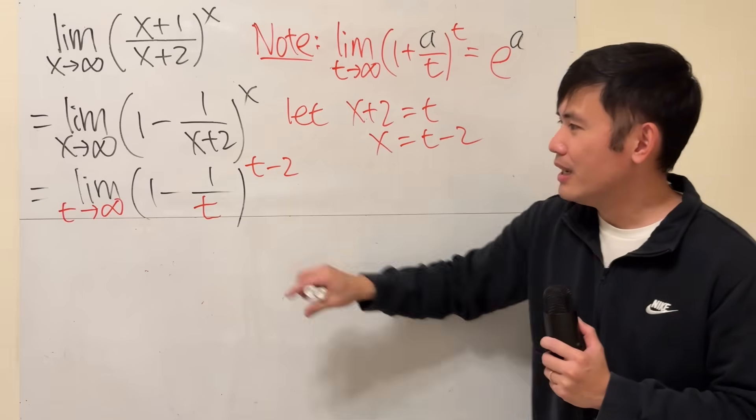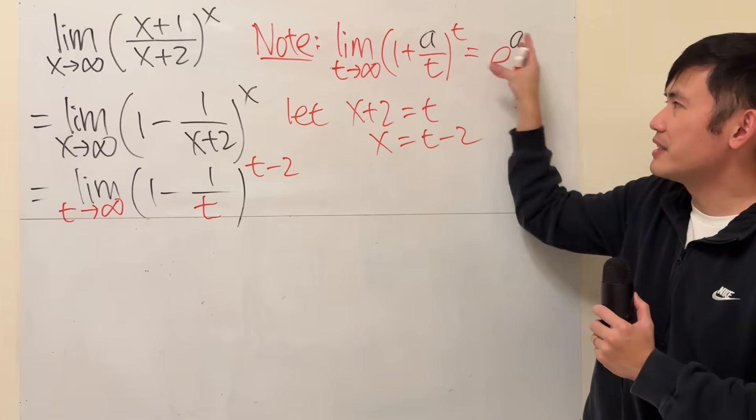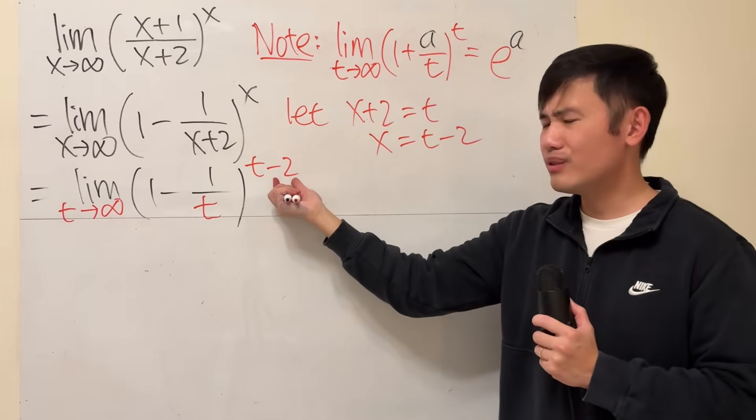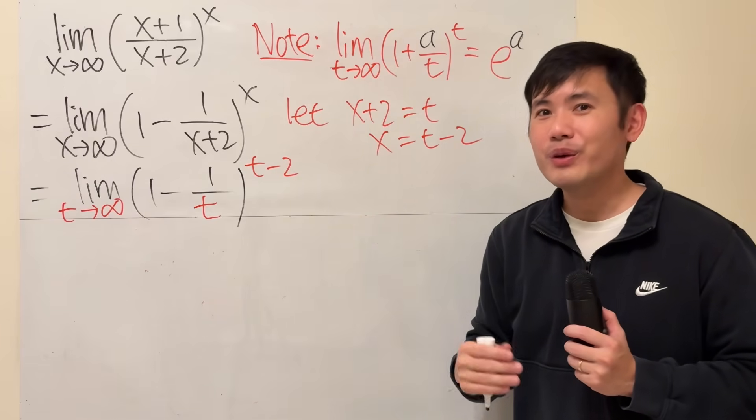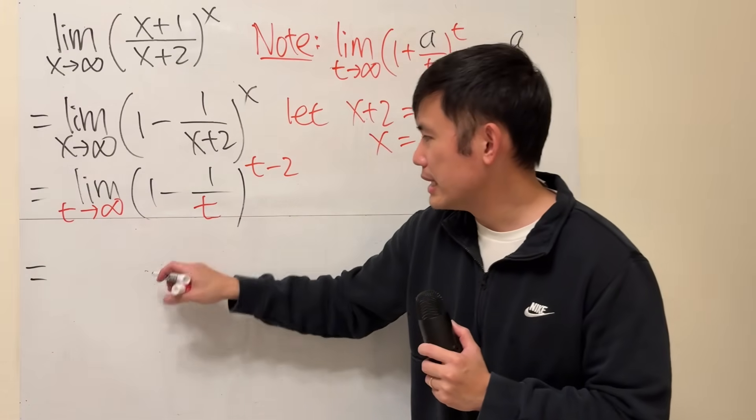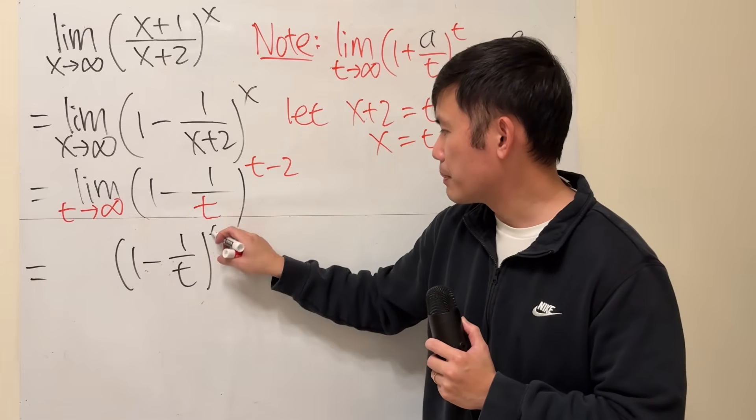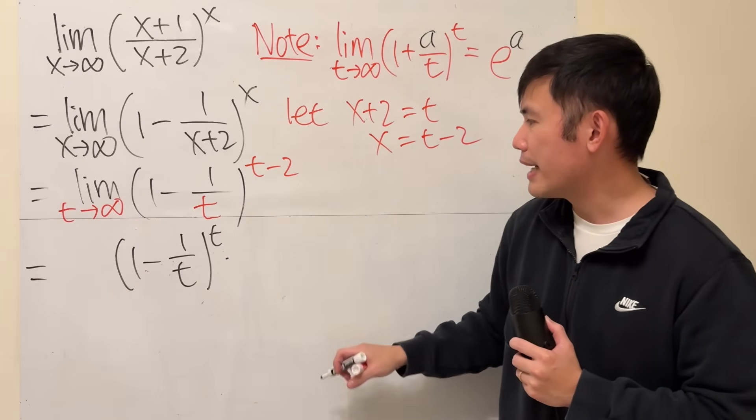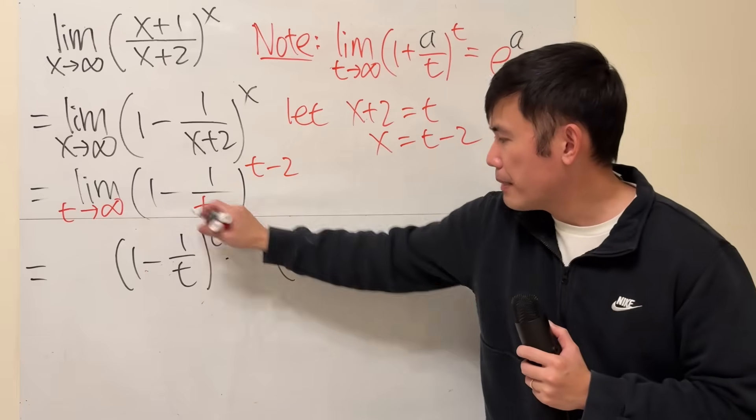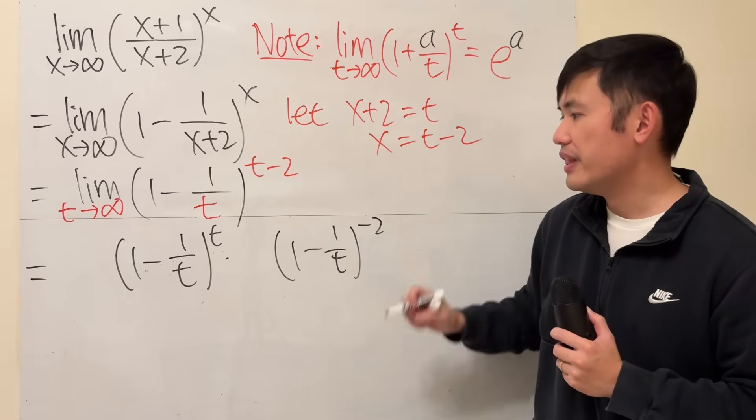What more can we do though? I cannot just want to have this part by itself. So, we can use this fact here. And then, this power, well, don't worry, we can just use the rule of exponent to break it down. Check this out. I'm going to write this down first. 1 minus 1 over t raised to the t's power. And then I'm going to multiply that by the same base.